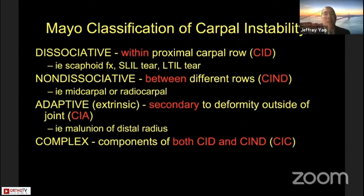We typically use the MAYO classification of carpal instability — whether it's carpal instability dissociative, referring to the proximal carpal row; non-dissociative, between rows; adaptive; or in this case what we'll be discussing: the carpal instability complex concept, which incorporates components of both carpal instability dissociative and non-dissociative — i.e., the perilunate dislocation.